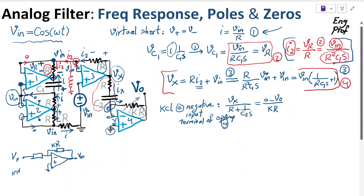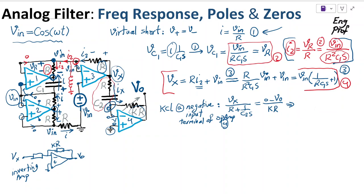Rather than just using the inverting amplifier gain formula directly, writing KCL gives us Vout equal to negative KR over (R + 1/(C2·S)) times V_x. This is equation 5, and we are almost done.